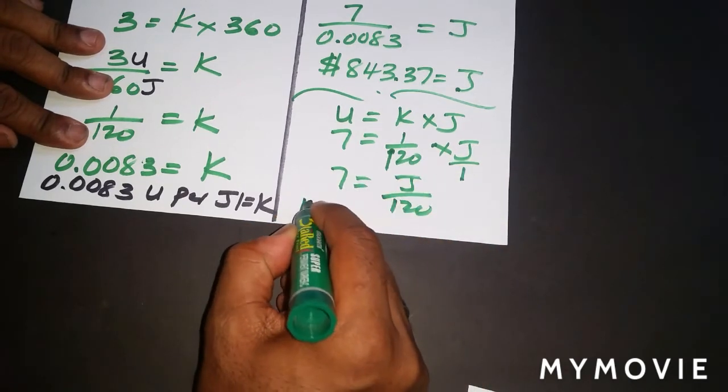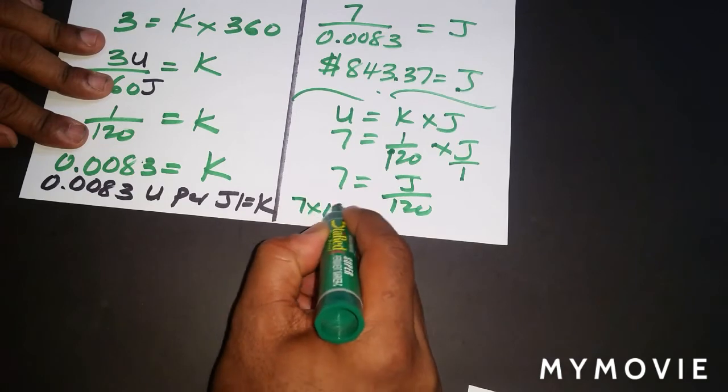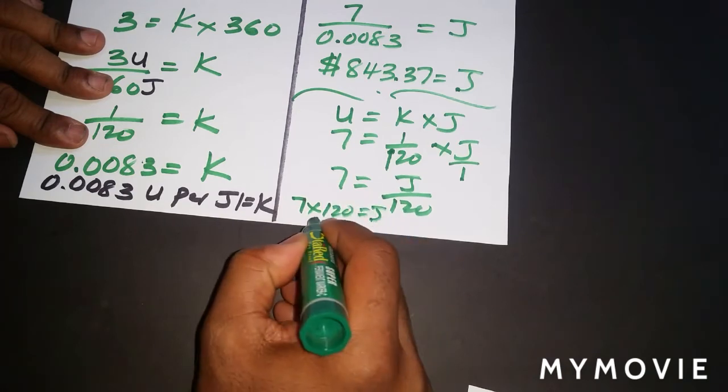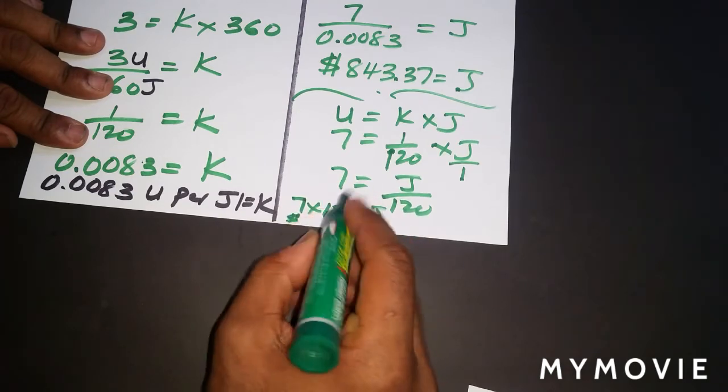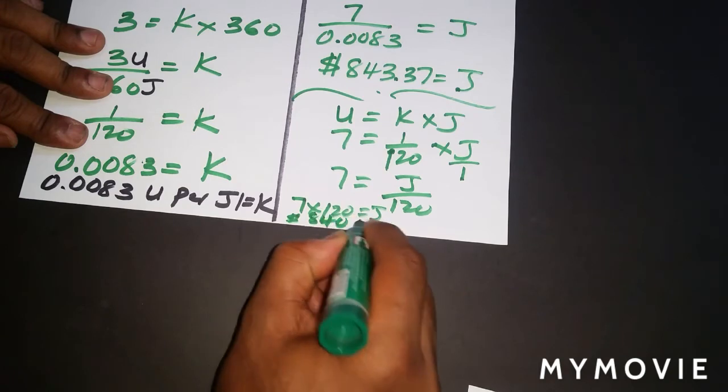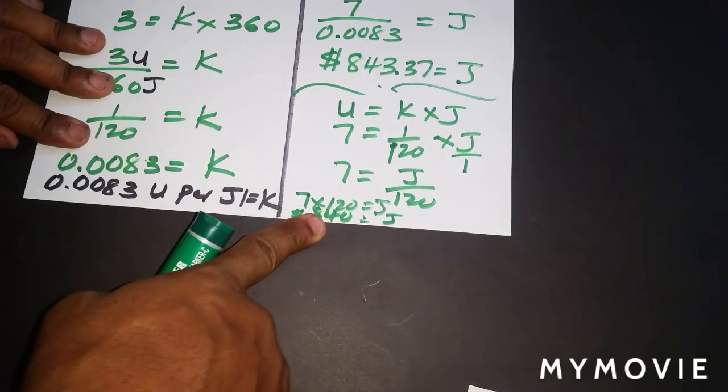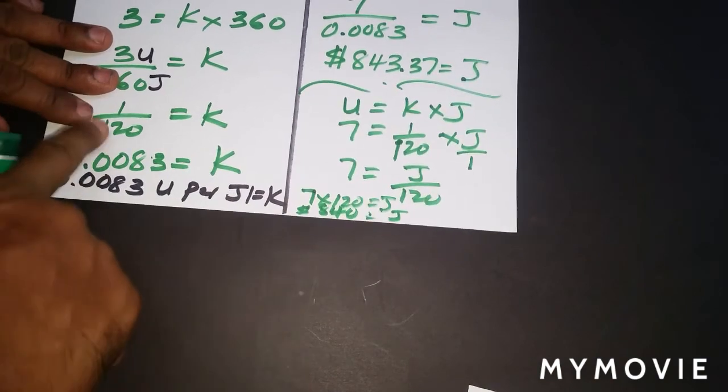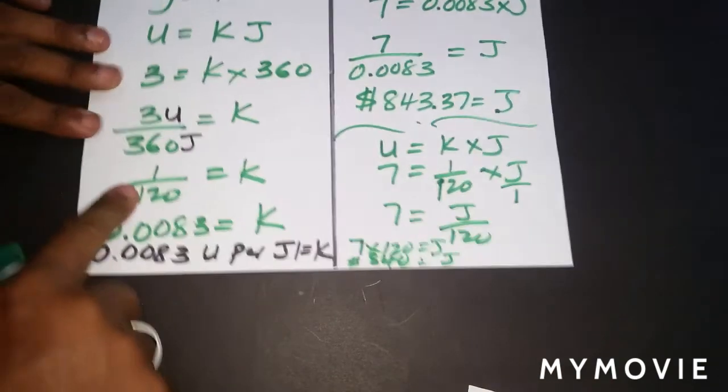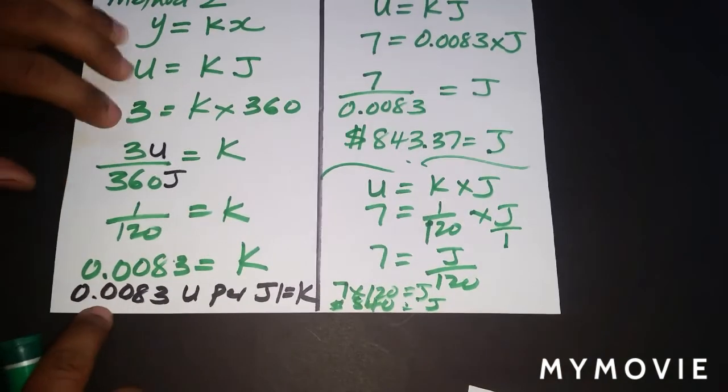And you cross multiply. 7 times 120 equals J, and you can clearly see now that you're going to get the exact 840. So you can clearly see we get the exact 840 when we use a fraction.